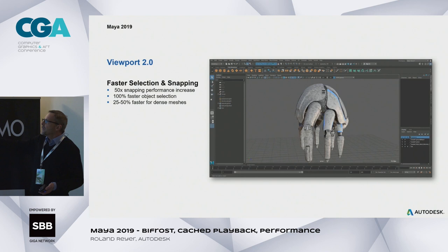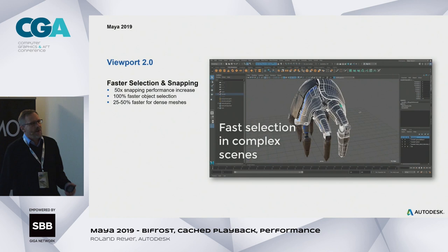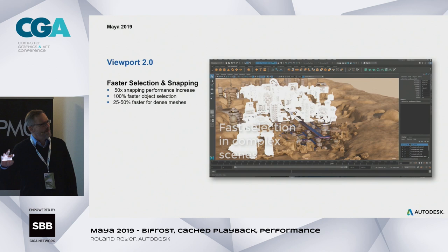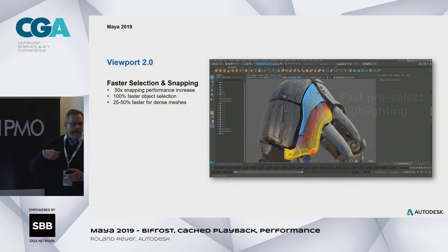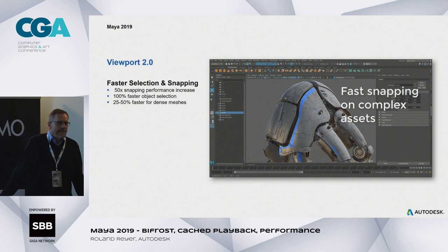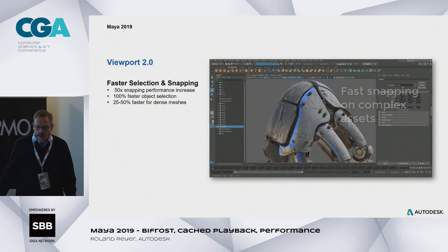Then comes the slide that promises faster selection and faster snapping — the most boring slide you can think of. We can claim things like 'you can select 50 times faster,' and nobody ever checks it because when you have 2019 installed, 2018 is long gone and you're not going to test it.